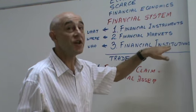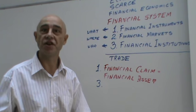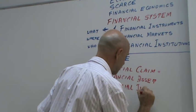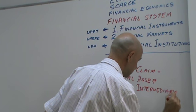Number three: financial institution, also known as financial intermediaries. A financial institution is an institution which invests in financial instruments and issues financial instruments of its own.